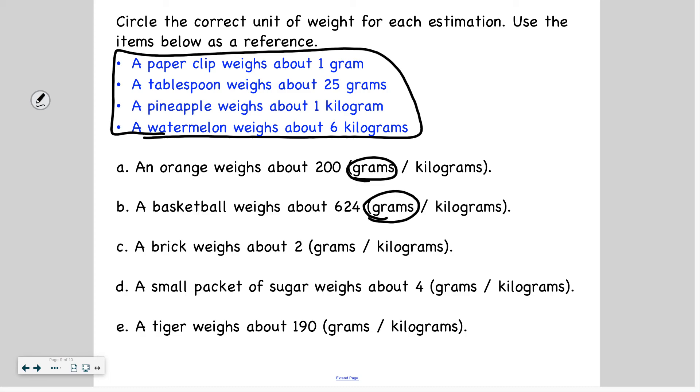Well, welcome back again. So a brick weighs about 2 grams or kilograms. Well, 2 grams seems like way too little because a paperclip is 1 gram. And a brick weighs way more than a paperclip. So I'm going to go with kilograms.